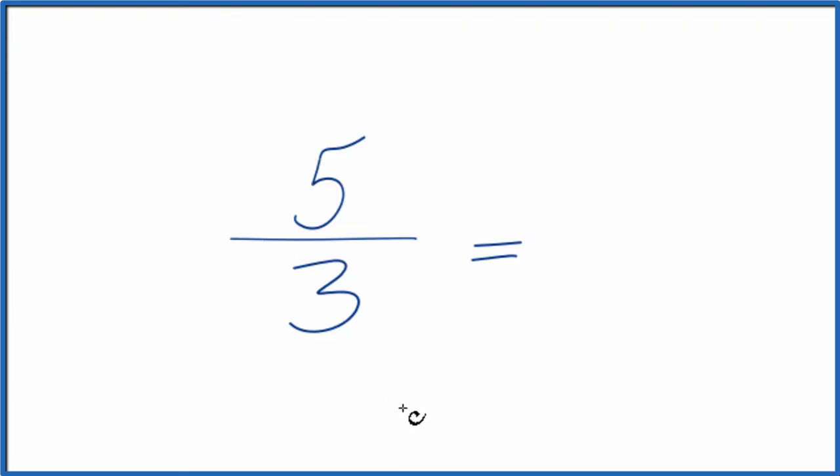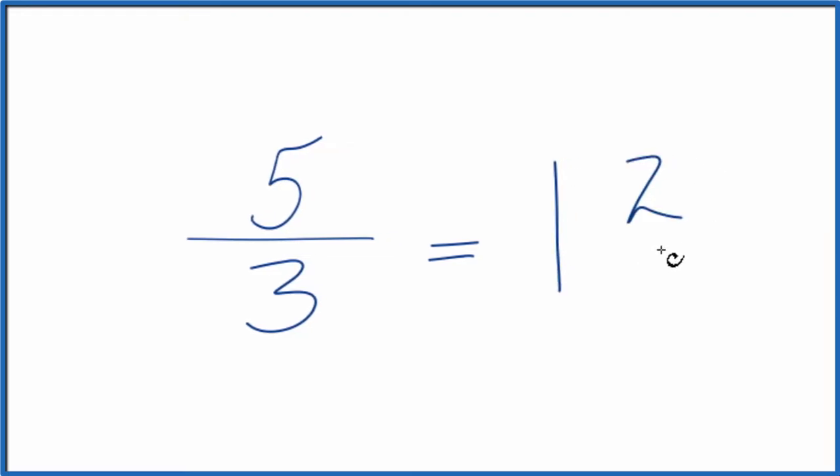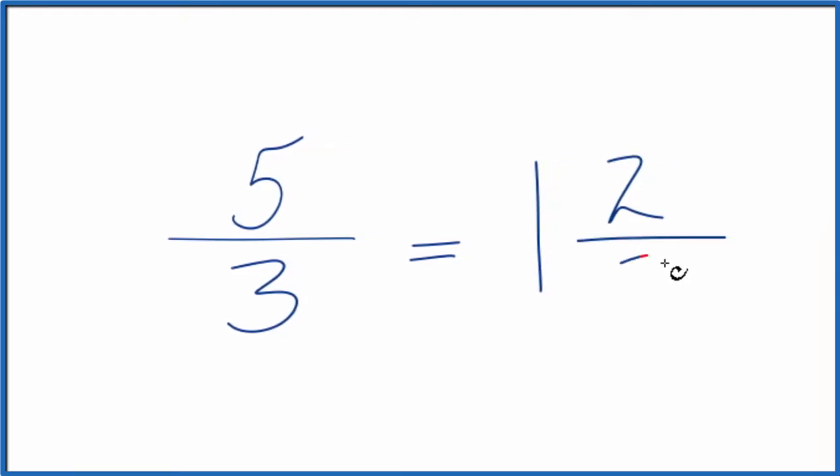We could change it to a mixed number. Right now it's an improper fraction because the numerator is larger than the denominator. So to do that, 3 goes into 5 one time with 2 left over, and then we just bring the denominator across.